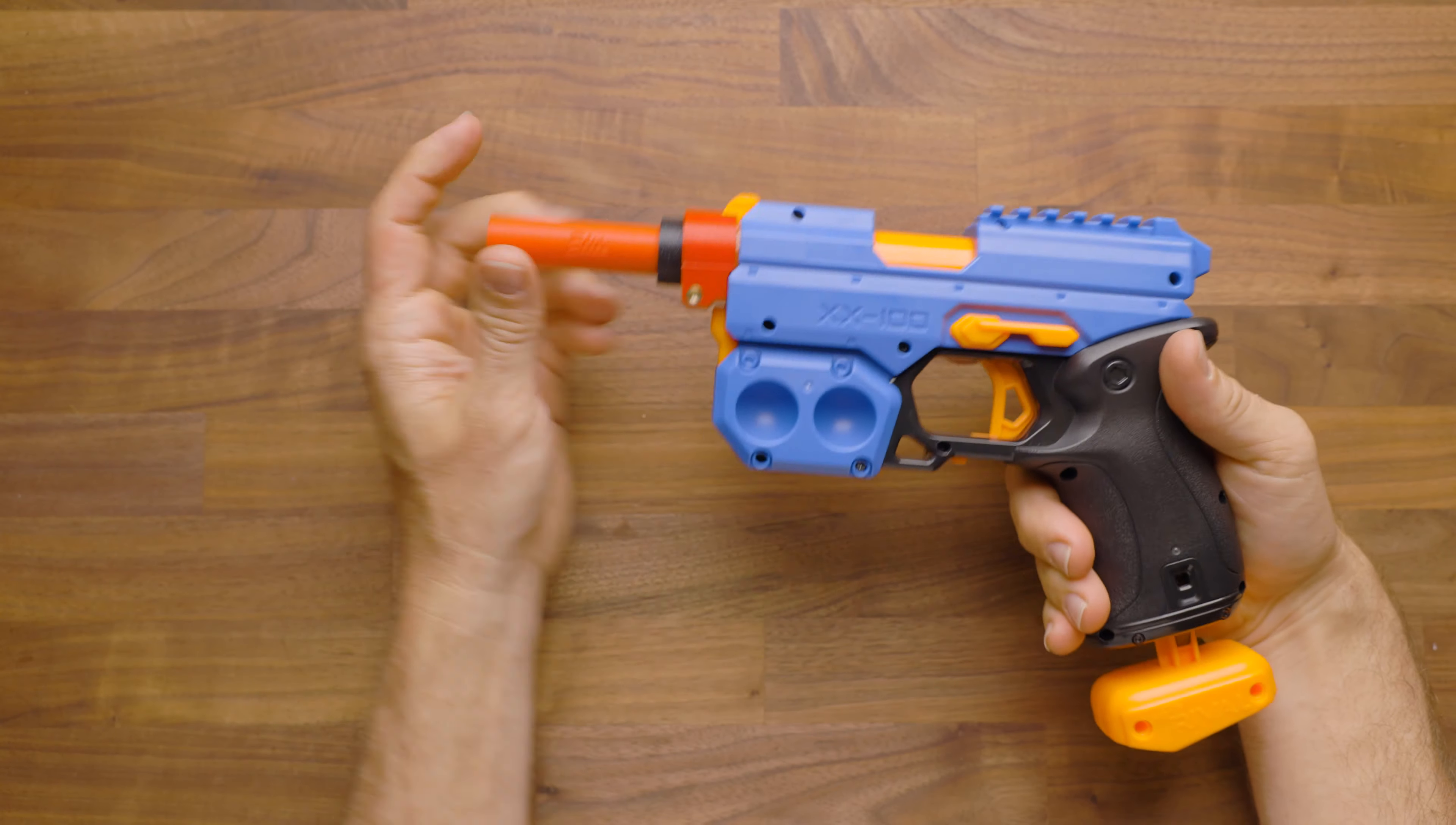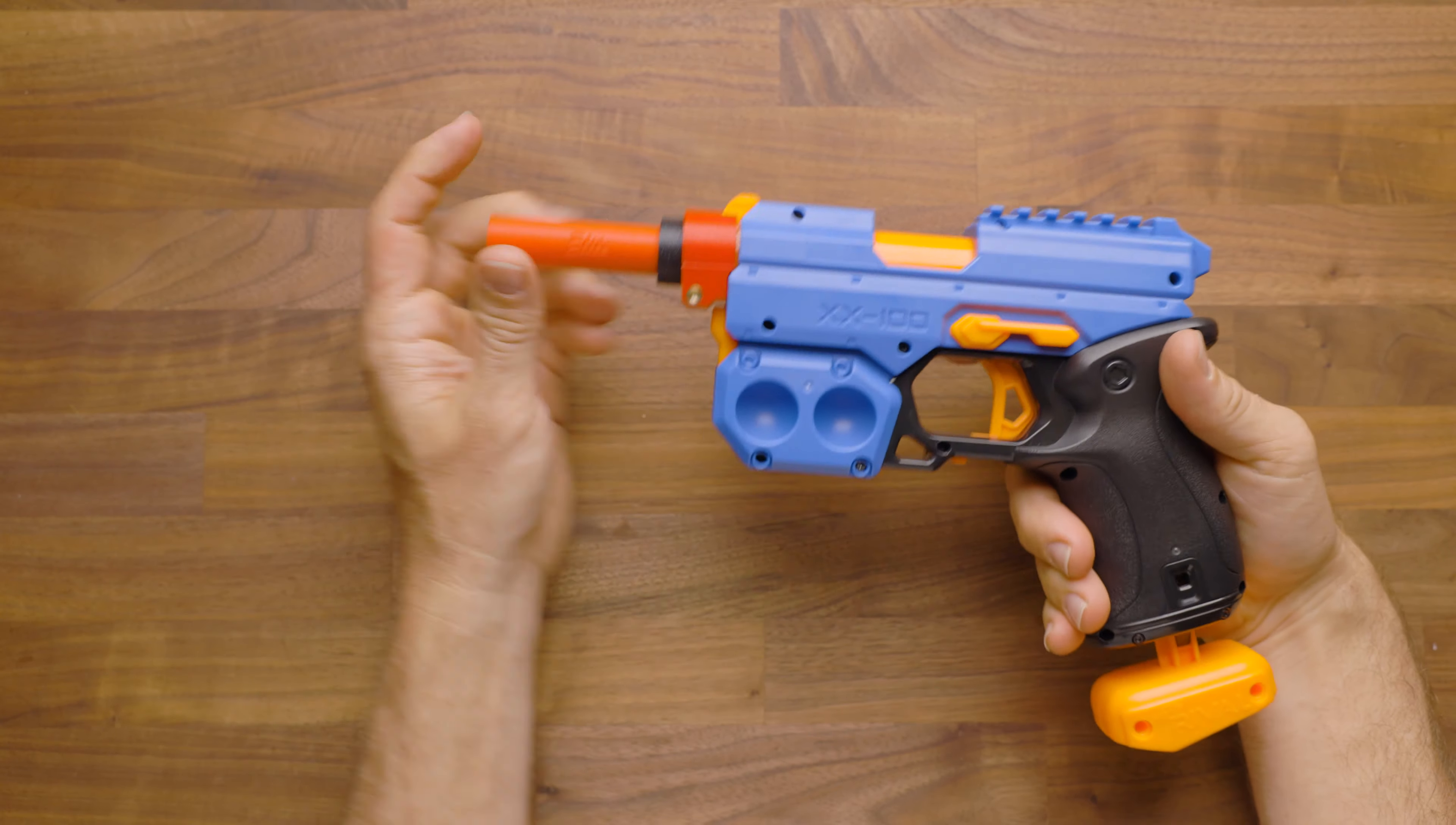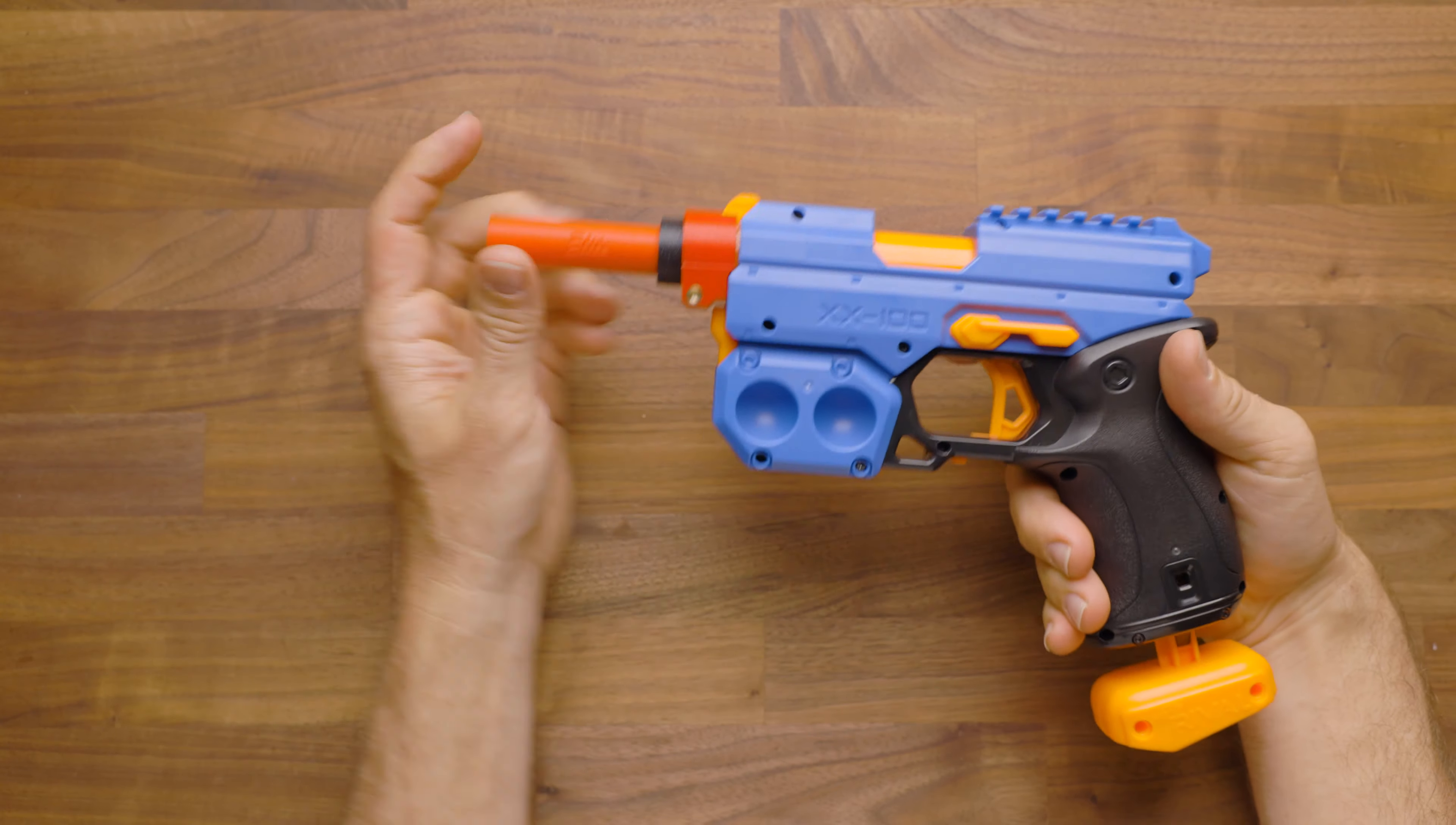We can screw in the barrel. Of course the cycle is the same as the stock blaster. You're going to prime, push your prime back, and then simply fire.